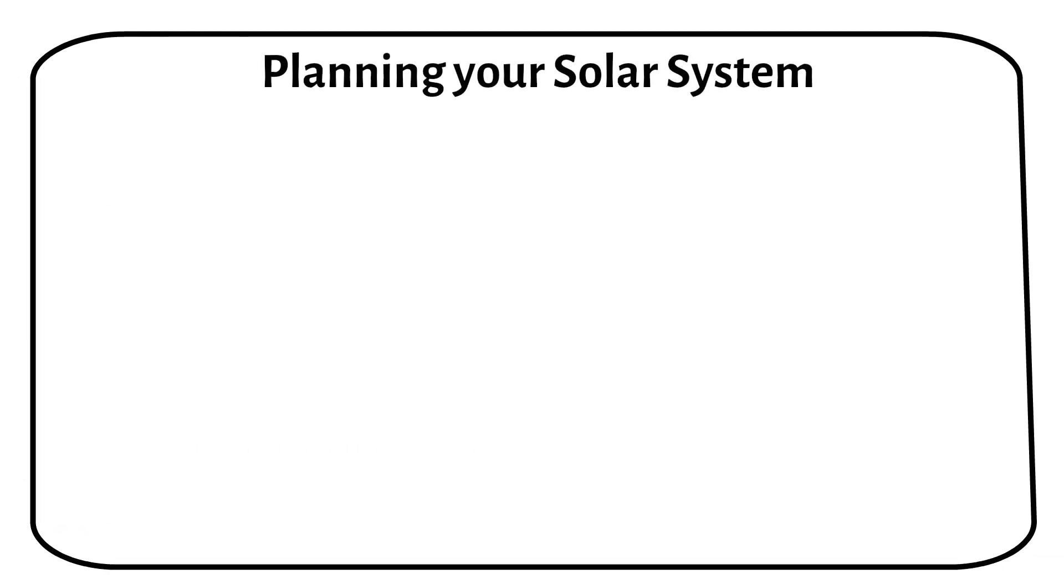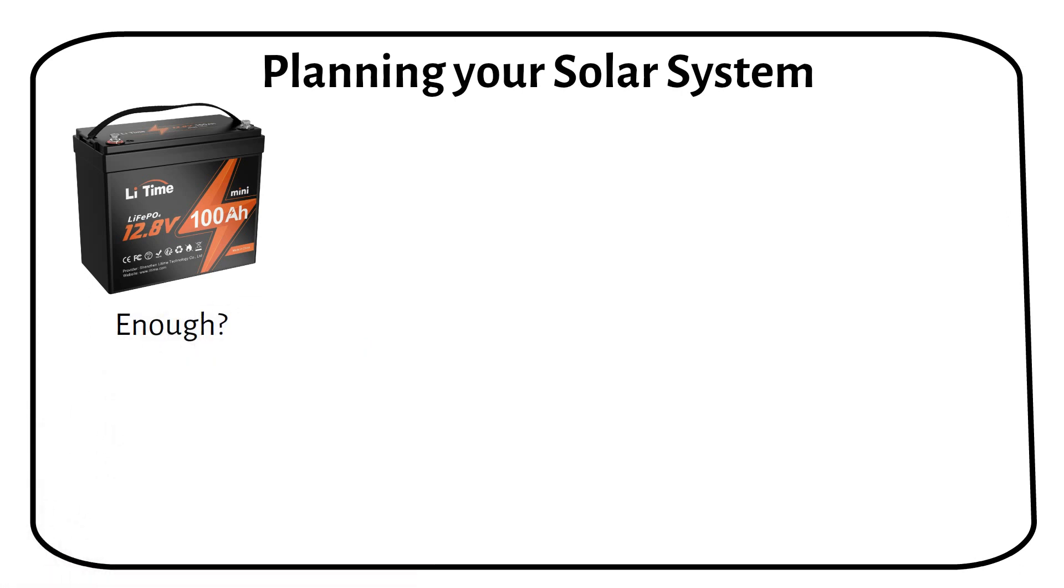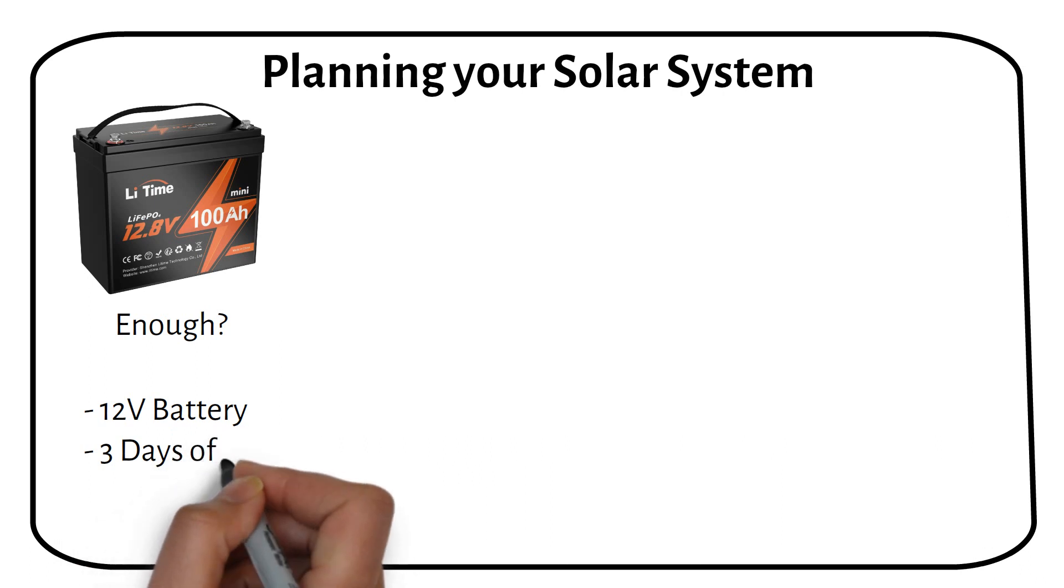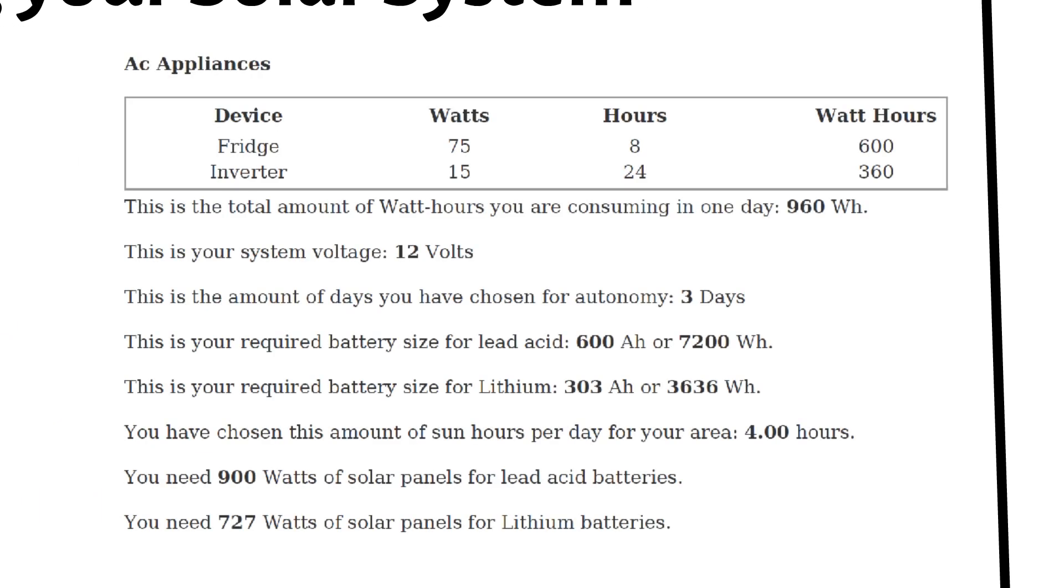Let's discuss a question many of you might have. What size solar system do I need to run this fridge? Will a 12 volt 100 amp hour battery be enough? With the fridge consuming 600 watt hours daily, I will outline the essentials for a solar setup that ensures the fridge keeps running. First, we're looking at a 12 volt battery system, designed for 3 days of autonomy. This is to ensure your fridge stays on even during cloudy days. I have calculated about 4 hours of sunlight. Don't forget to add the consumption of the inverter, which uses 15 watts by just being on 24x7. I will use the off-grid solar calculator on my website to calculate this. The link will be in the description for those interested in using it.